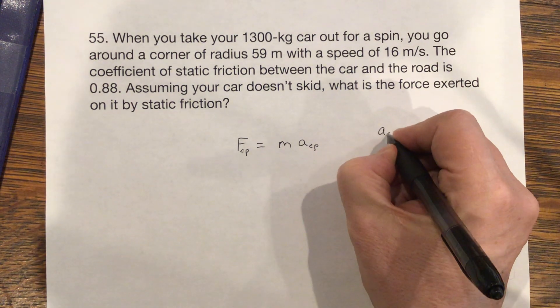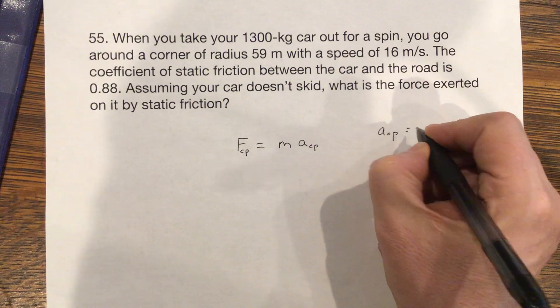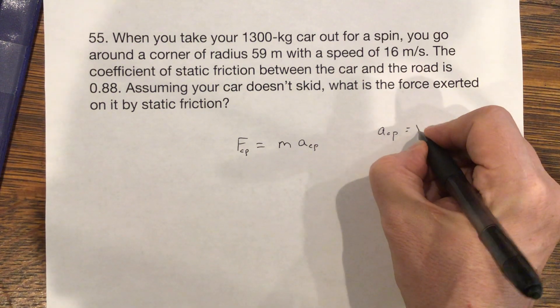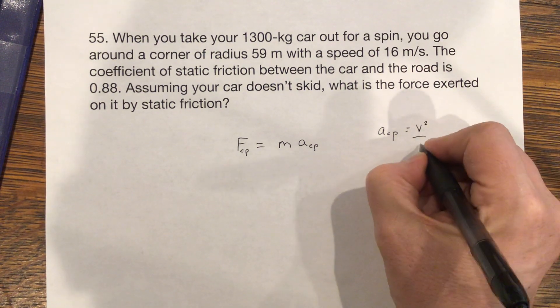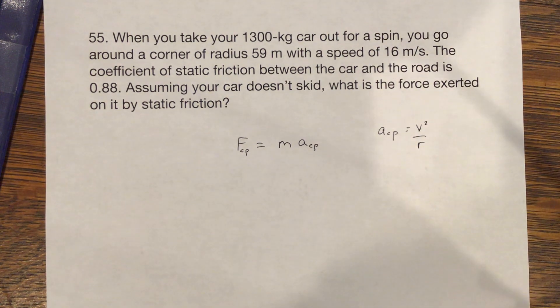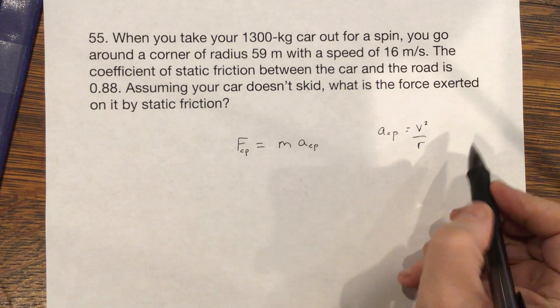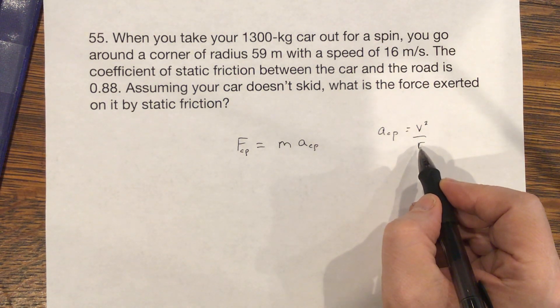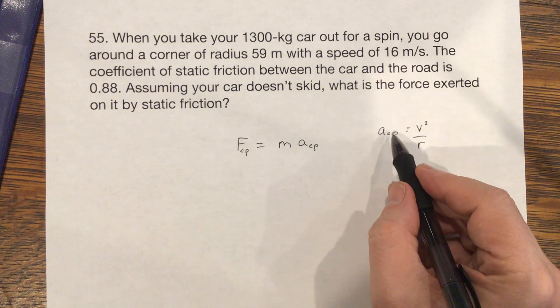The acceleration, centripetal acceleration, is defined to be the square of the velocity divided by the radius of the circle. So as the circle's radius gets smaller and smaller, your acceleration gets bigger and bigger.